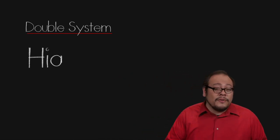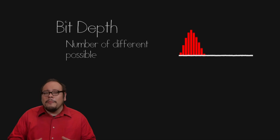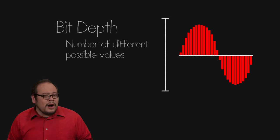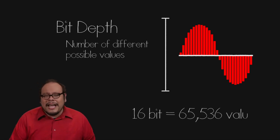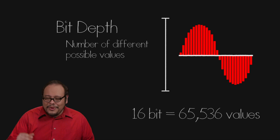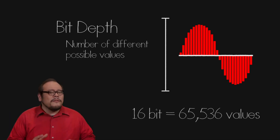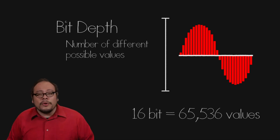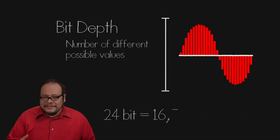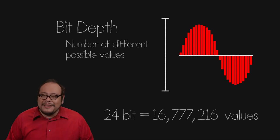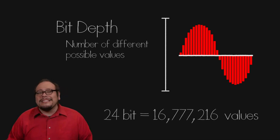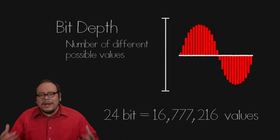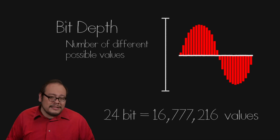Besides sampling resolution, dedicated audio recorders can also deliver great bit depth. Bit depth is how many different values of amplitude each sample can have. With 16-bit audio, each sample can have one of 65,536 values — that's 2 to the 16th power — which is what most professional cameras and codecs record. But with a good dedicated audio recorder, you can record at 24 bits, which gives us 16,777,216 possible values — 2 to the 24th power. This extra resolution contributes to that translucent quality and ease of processing in post.